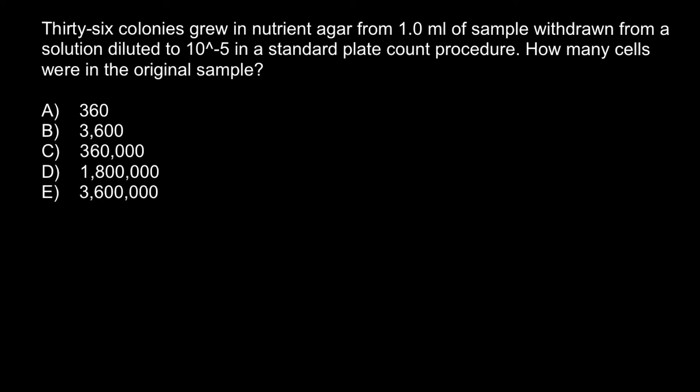Hello and welcome to Nikolai's genetics lessons. Today's problem is: 36 colonies grow in nutrient agar from 1.0 milliliter of sample withdrawn from a solution diluted to 10^-5 in a standard plate count procedure. How many cells were in the original sample? Here are the answers you can choose from.